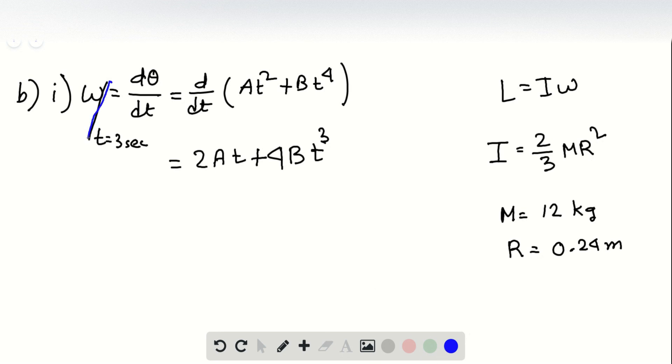let me write down with a different color. So this means omega at 3 seconds. So omega at 3 seconds will be 128 radians per second.